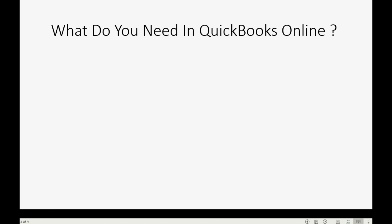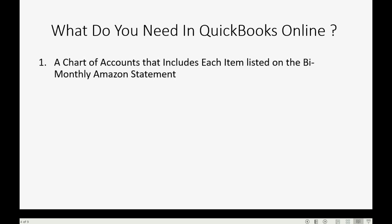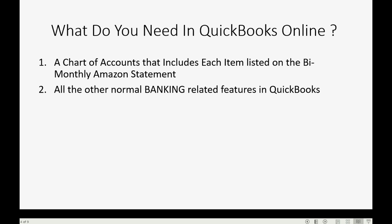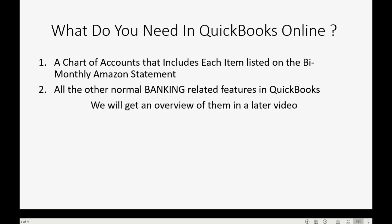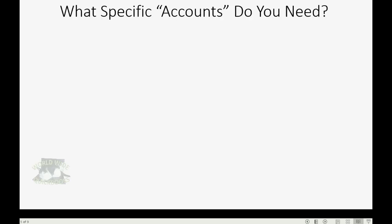So what do you need to do in QuickBooks Online when you get the statement? You need a chart of accounts that includes each item listed on the bi-monthly Amazon statement. You also need all the other normal banking-related features in QuickBooks to manage your general administrative expenses and record purchasing the merchandise. What specific accounts do you need to record the bi-monthly deposit?